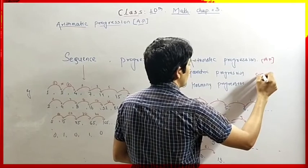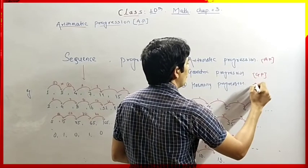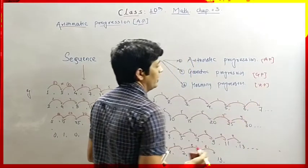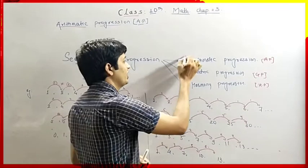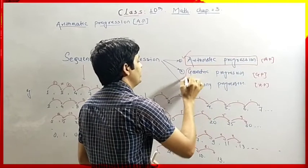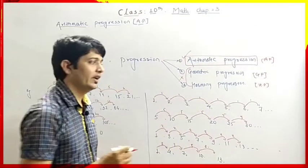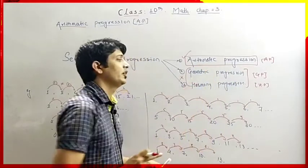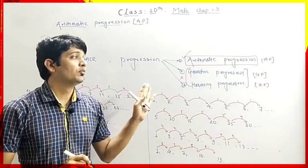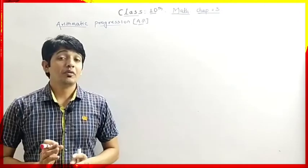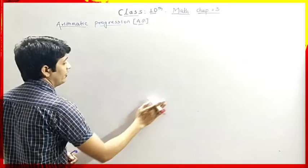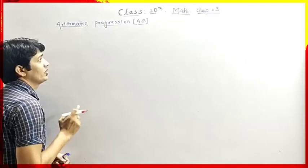Geometric Progression is not in our syllabus, and Harmonic Progression is also not in our syllabus. That means we have to understand in this chapter only about Arithmetic Progression. So we will understand Arithmetic Progression only. Now we will take one more sequence so that we can understand Arithmetic Progression in detail.